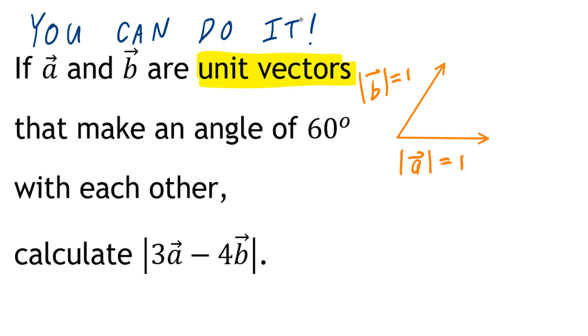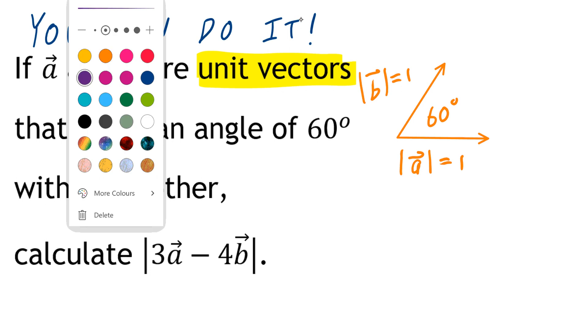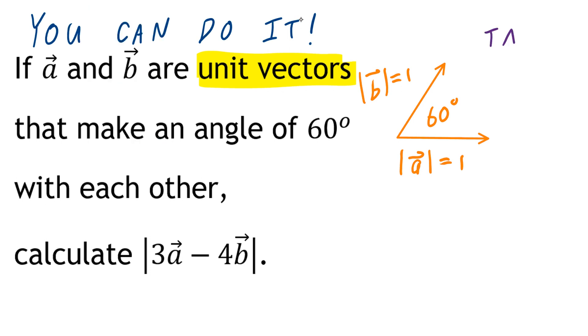Now, be mindful that the angle between them is 60 degrees, and the key here is, always connect the vectors tail to tail when it comes to measuring the angle, angle theta in between them.